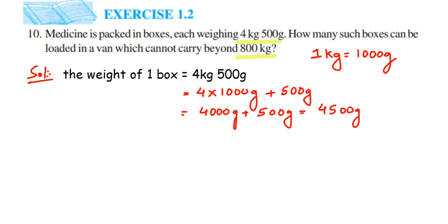Now we have also given 800 kg, so we have to convert even that. So 800 kg will be equal to 800 multiplied by 1000 grams, and this will be equal to 800,000 grams—that's 8 lakh grams.